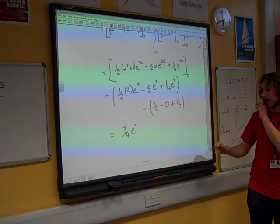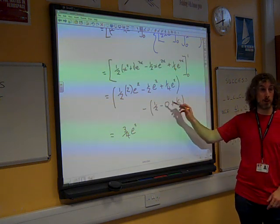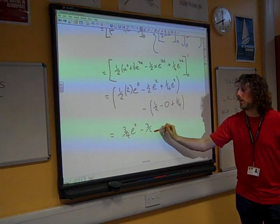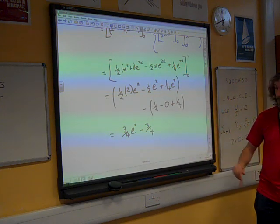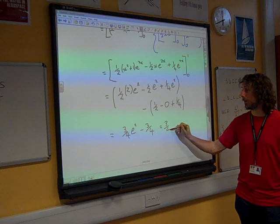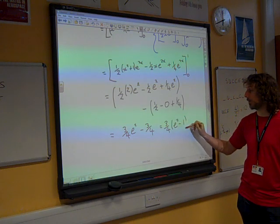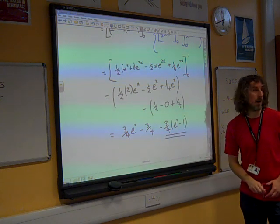And I'm taking away a half plus a quarter, that's 3 quarters as well, so take away 3 quarters. It might be nice to write 3 quarters of e squared minus 1 as our exact value.